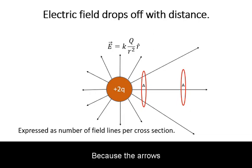Because the arrows spread out with distance, the number of arrows per cross-sectional area drops off. This represents the weakening of electric field with distance.